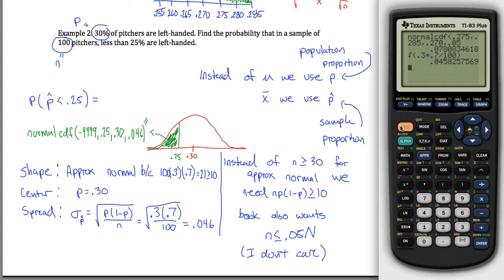Again, we've got to get normalcdf, which is under our distribution menu. And then if you enter all those inputs, negative 9999, make sure you use this for the negative, not this subtraction sign. And then we'll put a comma in. 0.25 is our right endpoint. 0.30 is our mean.